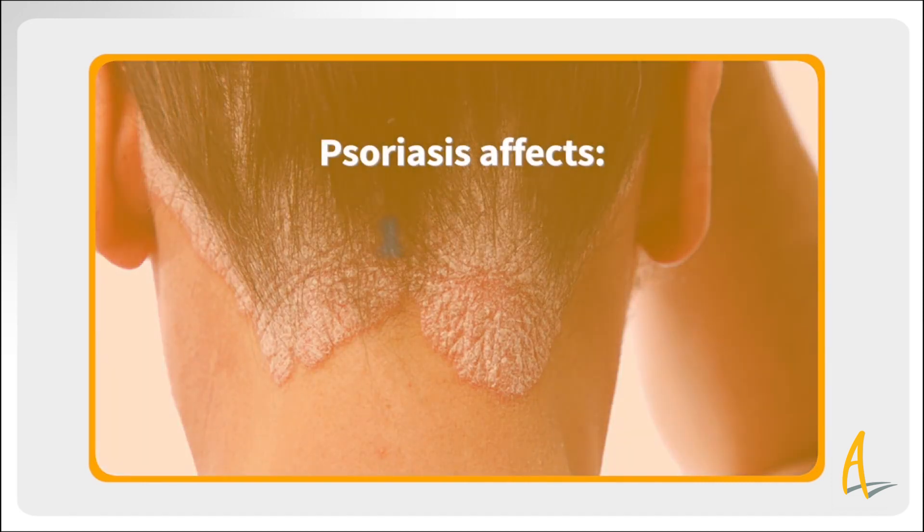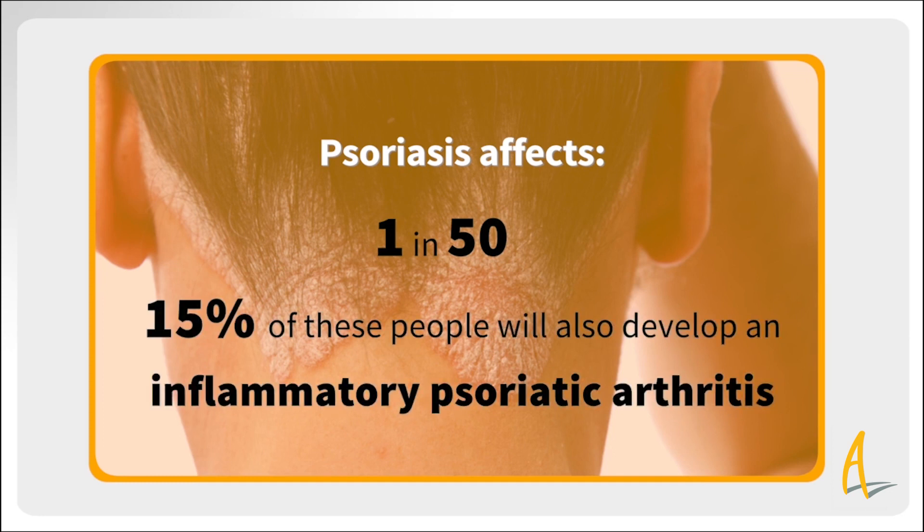Psoriasis affects about 1 in 50 people. About 15% of these people will also develop an inflammatory psoriatic arthritis at a later date. Occasionally, the arthritis can develop first.